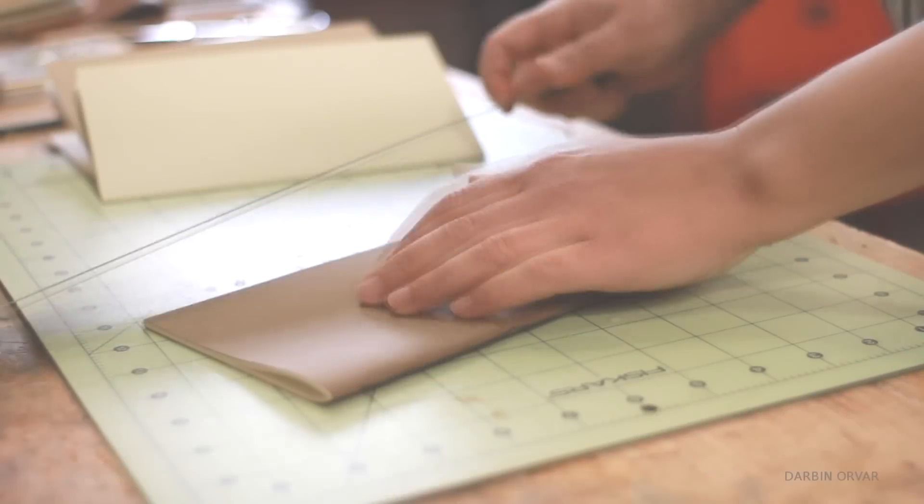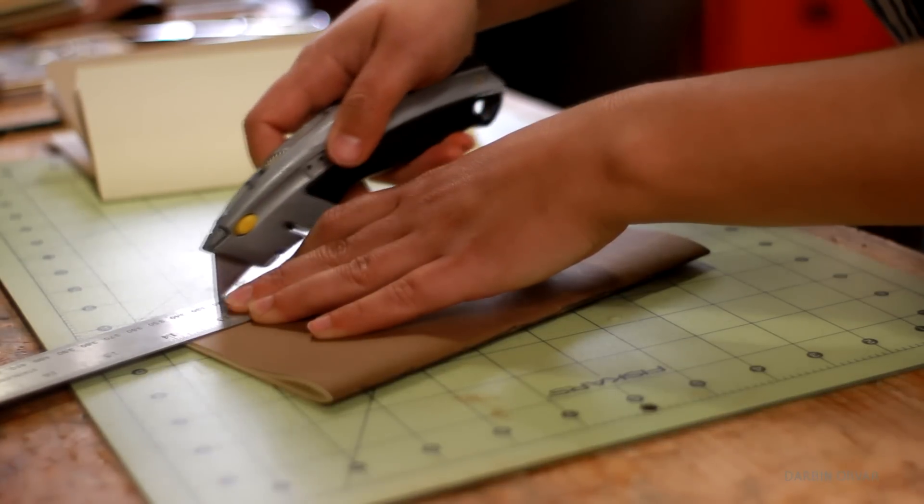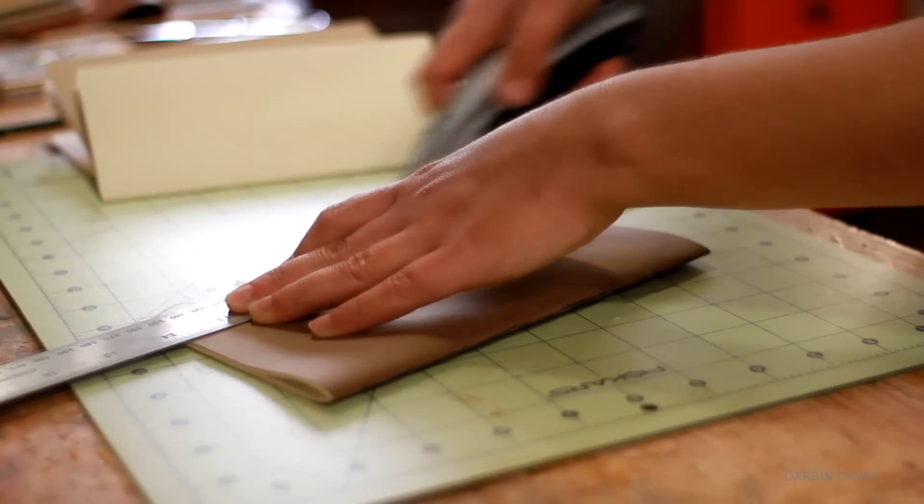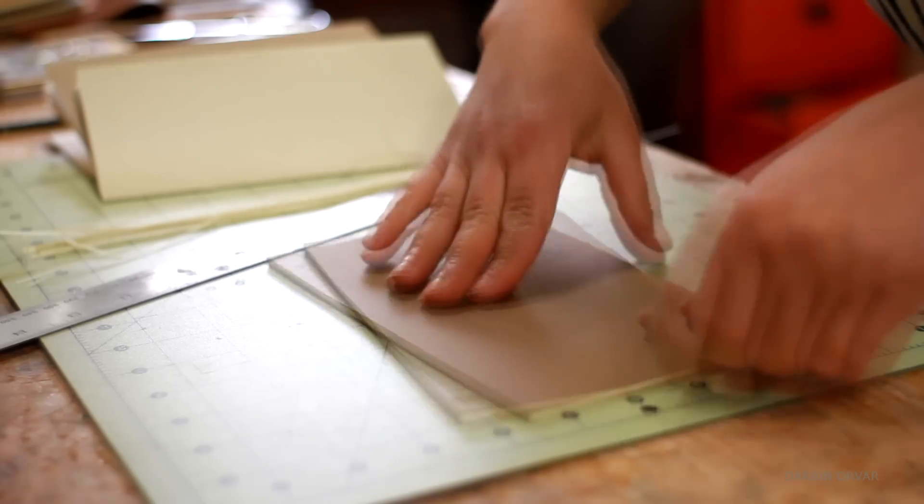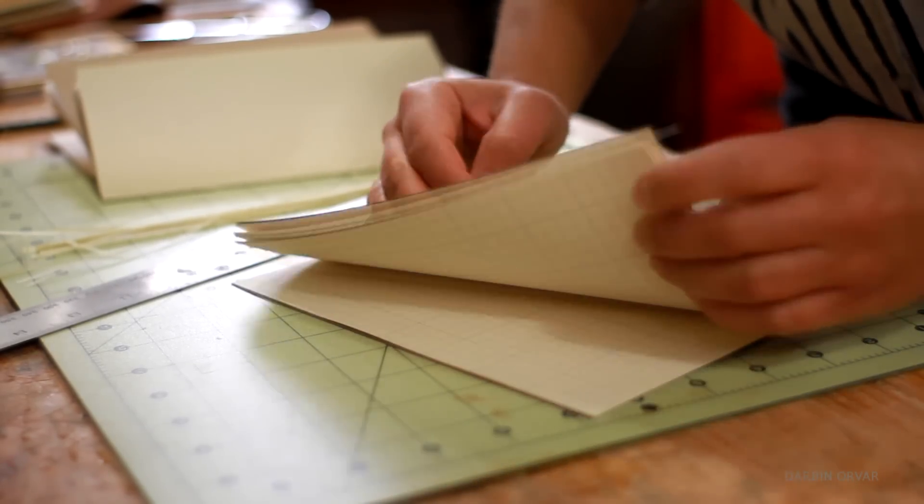Lastly I clean the edge, by putting a ruler down and lightly scoring a bunch of times with a razor blade. The trick is to have a sharp blade and not push too hard. Just do it over and over until the paper is all cut.